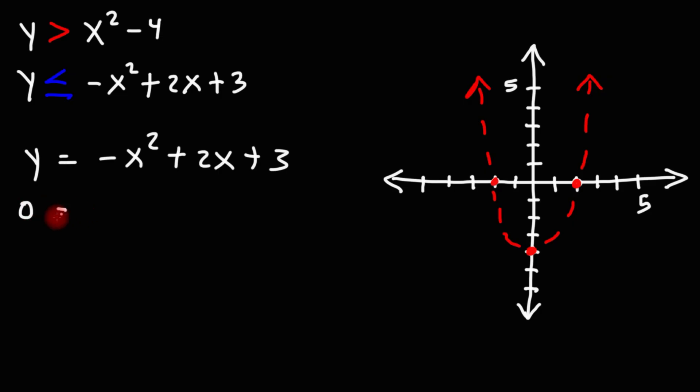So I'm going to set y equal to 0, and I'm going to try to factor this trinomial. First, I'm going to take out negative 1 from every term. So every term is going to change signs.